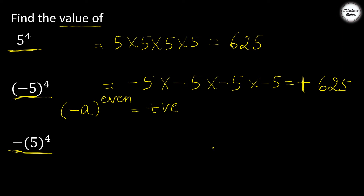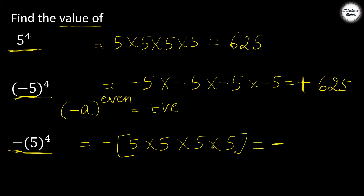In the third case, minus is outside the bracket — it is not being multiplied with 5. Only the base 5 is multiplied 4 times. We put the minus outside, and 5 multiplied 4 times gives 625, so the answer is minus 625. The difference: when minus is inside the bracket it multiplies with 5, giving minus 5 × minus 5 × minus 5 × minus 5.